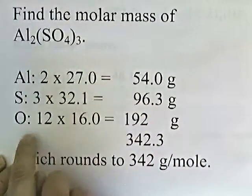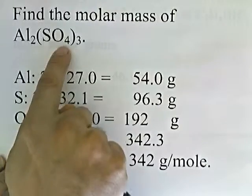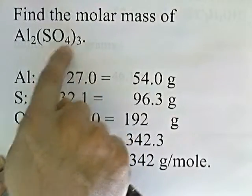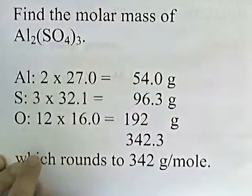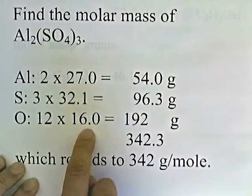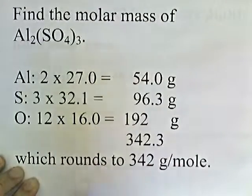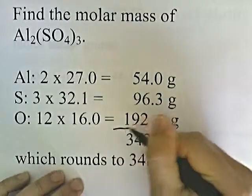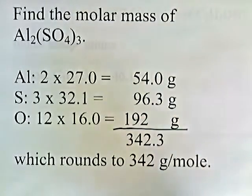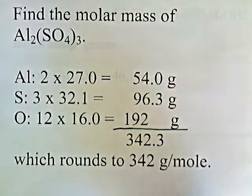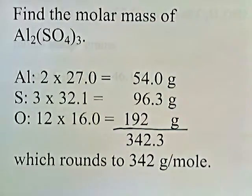Then oxygen: four times three gives 12 oxygens in this molecule. 12 times 16.0 — remember oxygen was originally 15.999, rounded to three significant digits — gives 192. Adding everything together: 2(27.0) + 96.3 + 192 = 342.3, which rounds to 342 — three significant digits. So one mole of aluminum sulfate weighs 342 grams.